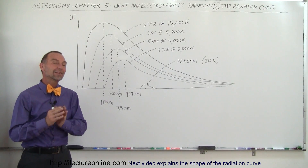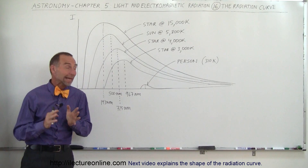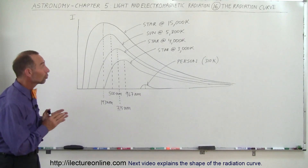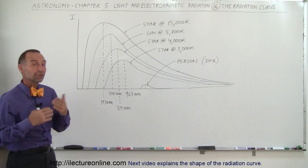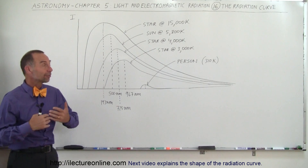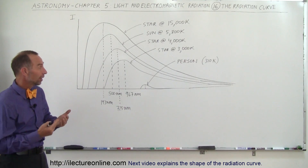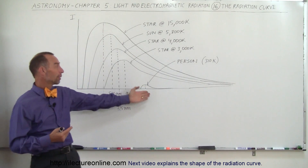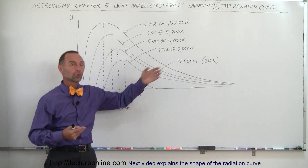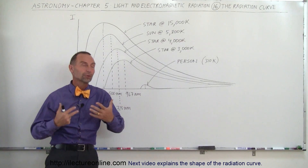Welcome to Electron Online. Now let's take a closer look at the radiation curve coming from different objects, mainly different types of stars, and then also comparing to the radiation curve of a person.